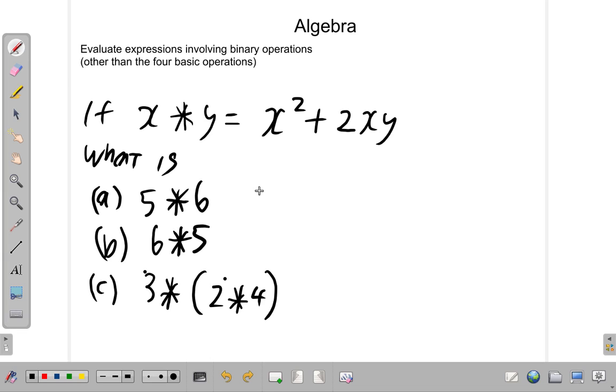Alright. So, you paused the video and you worked out all three, or you attempted to work out all three. Did you make an attempt at all three? Let's see what they turn out to be. X star Y, or asterisk, X asterisk Y is the same as x² + 2xy. What is 5 asterisk 6?